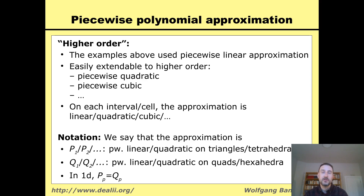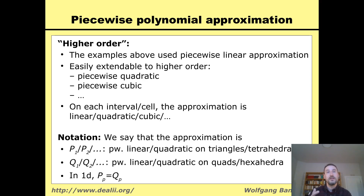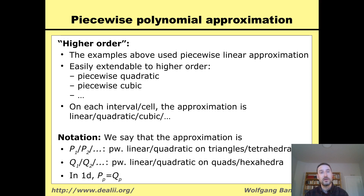For quadrilaterals and hexahedra, the functions are not individually linear but are linear in x and linear in y separately. They can have terms like x times y. So we use the notation Q1, Q2, Q3, Q4 for polynomials of degree one, two, three, and four on quadrilaterals and hexahedra. In 1D, there is no difference, so the P1 space and the Q1 space in 1D are the same.